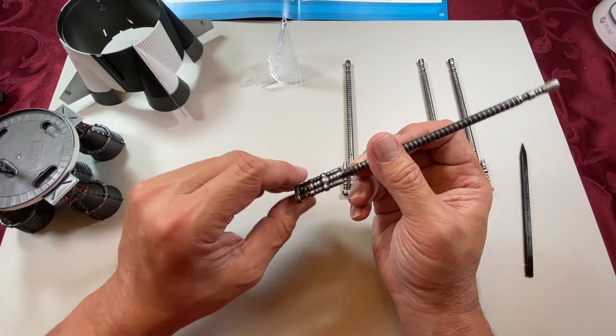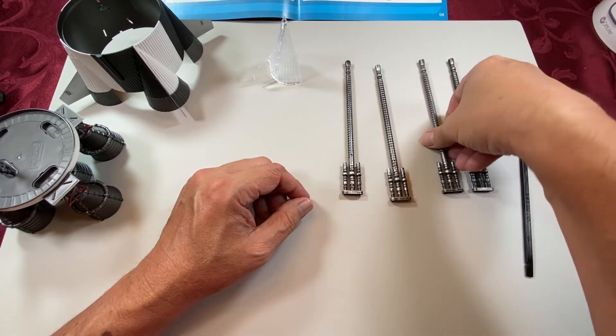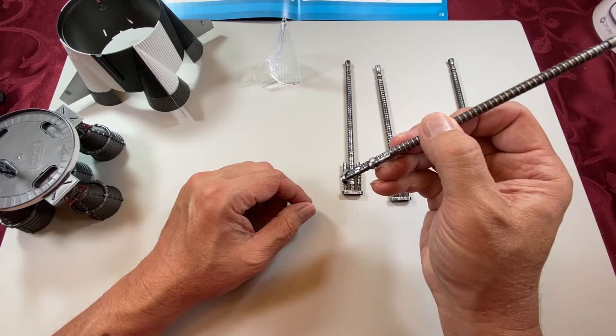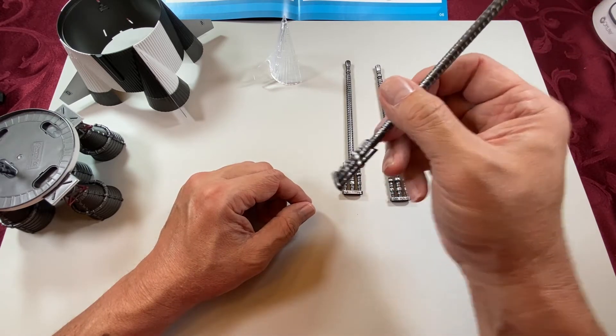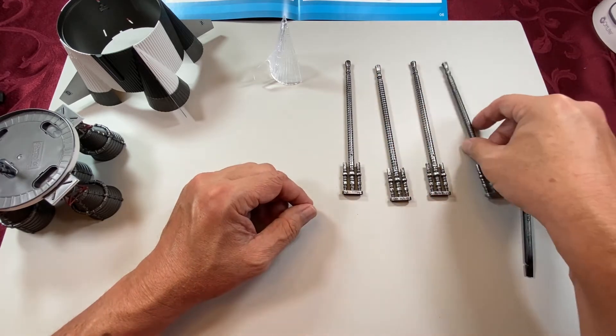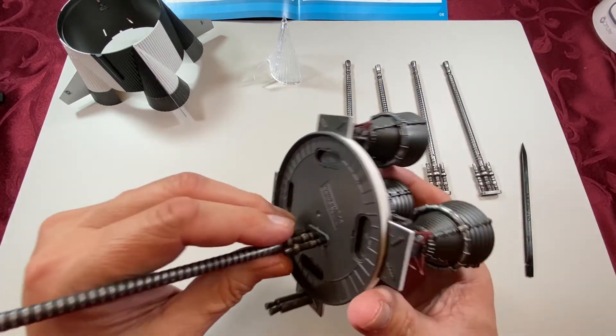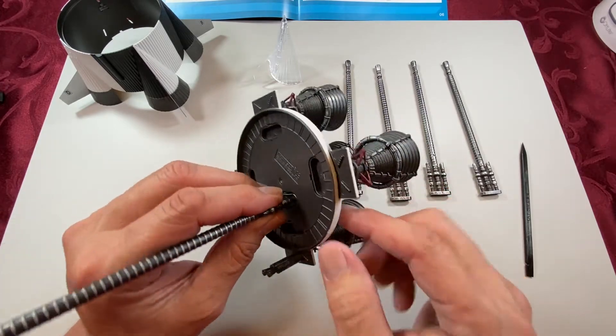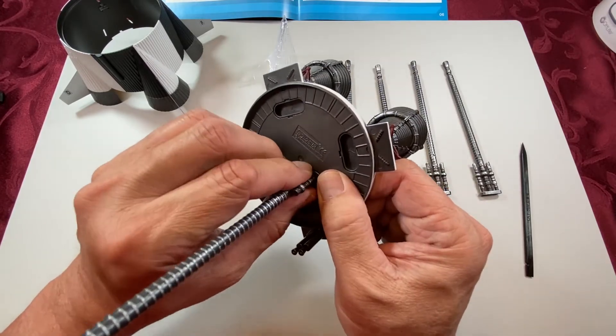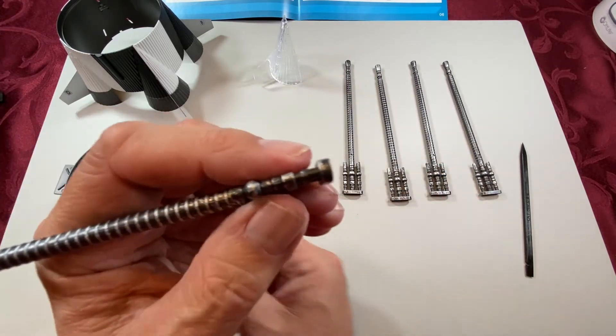The instructions don't really show that bevel, so you gotta figure this out. Now I gotta get that one I just put in taken out without breaking it. That went in pretty deep and tight. It's coming out, alright.